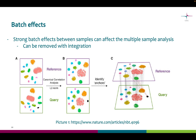The integration is implemented by computing dimensional reduction and finding anchors in the shared correlation structures of the datasets. These anchors represent spots in a shared biological state. After this, the actual integration is computed using the resulting anchors.